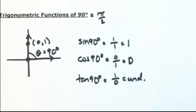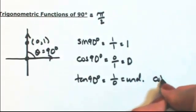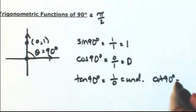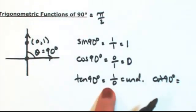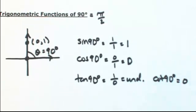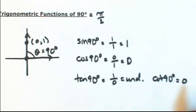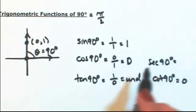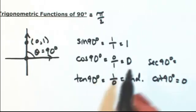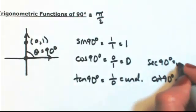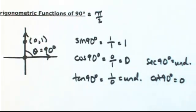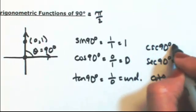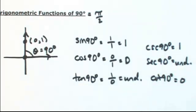Once you have those three, we'll just take the reciprocals. The cotangent of 90 degrees, or pi over 2, is the reciprocal of 1 over 0, so that's just 0. The secant of 90 degrees is the reciprocal of 0 over 1, so 1 over 0 — that's undefined. And the cosecant of 90 degrees is the reciprocal of 1, which is 1.